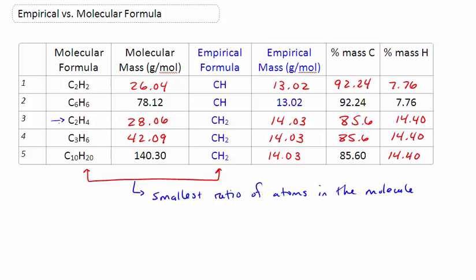So in essence, I need to divide always by the smallest member of that ratio. So in the earlier example, we saw B2H6. If you think about it, that one would become BH3 as its empirical formula.